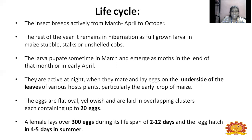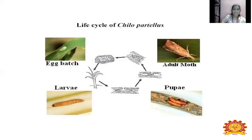The eggs are flat, oval, and yellowish in color, laid in cluster form — not singly. Each cluster contains up to 20 eggs. The stem borer female can lay over 300 eggs during her lifespan of 2 to 12 days. Eggs hatch in 4 to 5 days in summer.